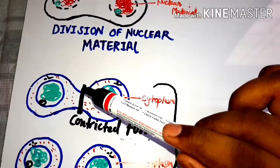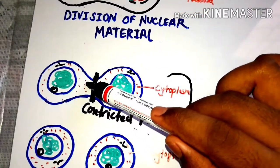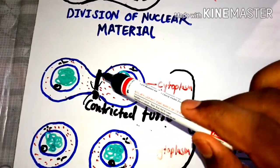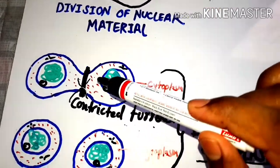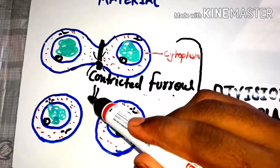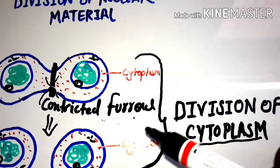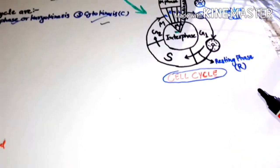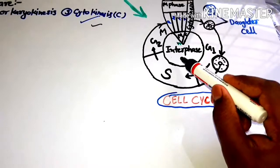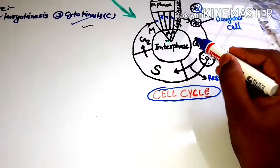Nuclear material is divided before, so now it's time to divide the cytoplasm. Cytoplasm starts dividing and it's divided finally. The constriction furrow comes like this, and both daughter cells detach from each other. This is divided.